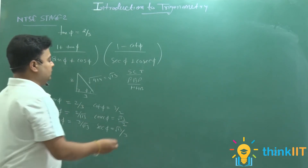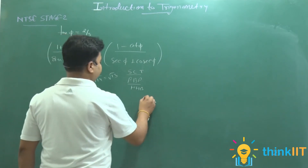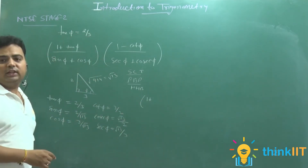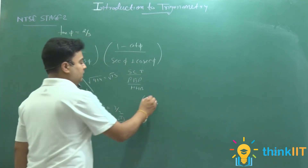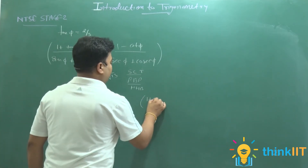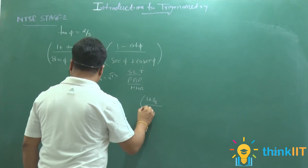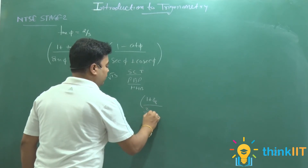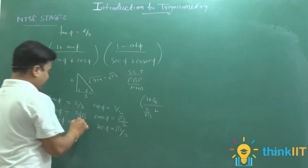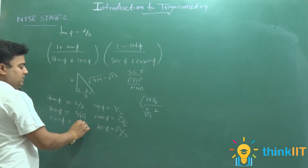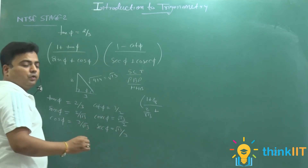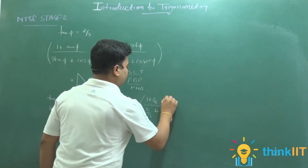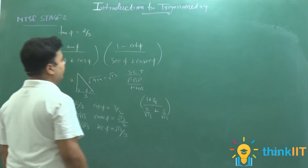तो पहला bracket: (1 + tan θ) / (sin θ + cos θ) = (1 + 2/3) / (2/√13 + 3/√13)। sin θ = 2/√13, cos θ = 3/√13। यह मेरा पहला bracket खत्म।